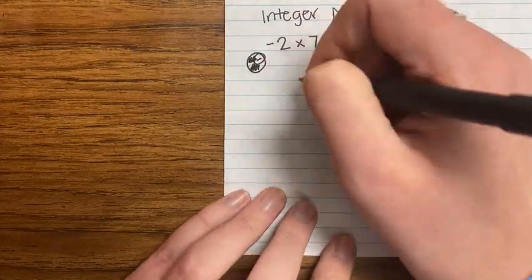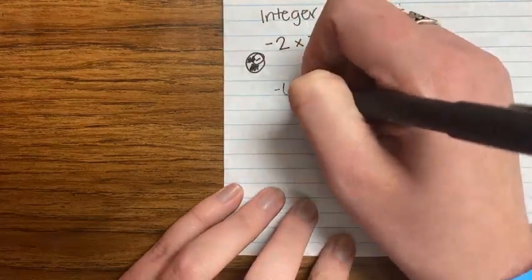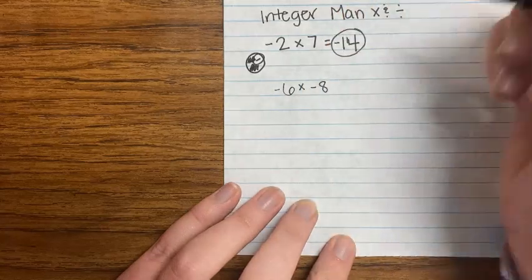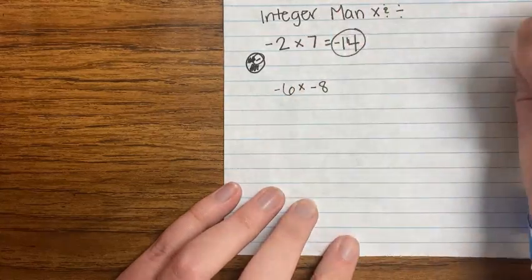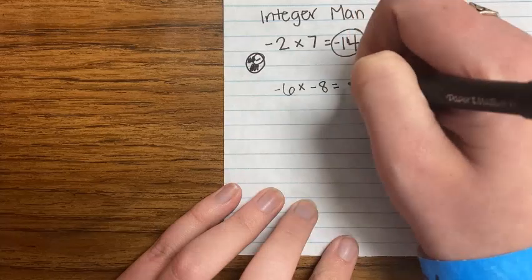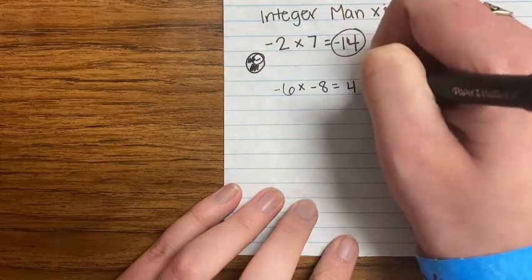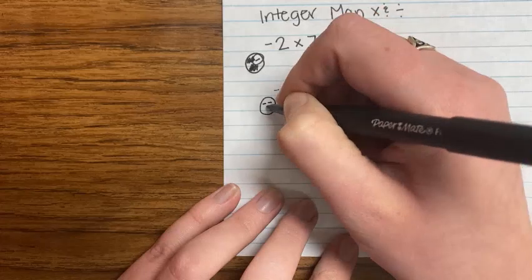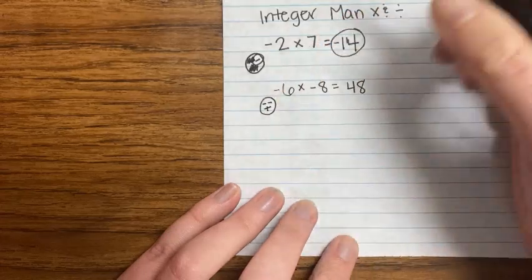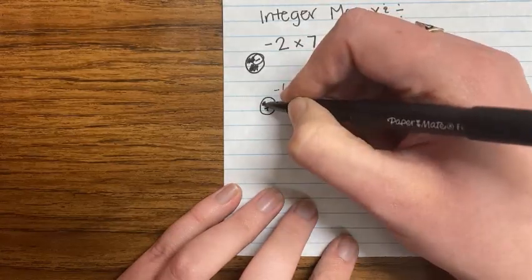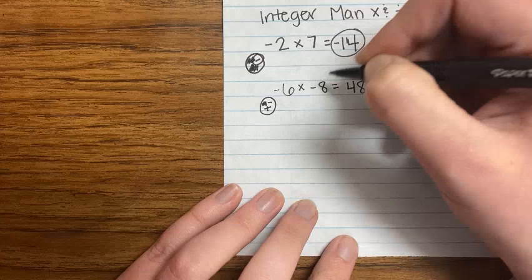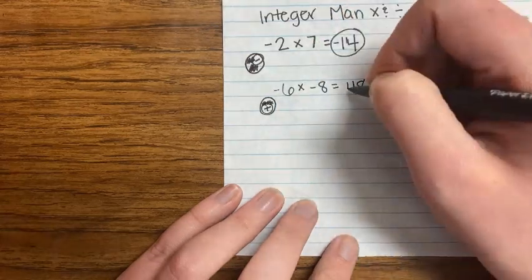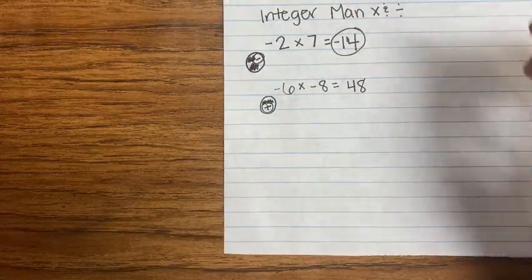If we have something like negative 6 times negative 8 — those are both negative — do regular multiplication: 6 times 8 is 48. But I need my integer man, so go ahead and draw him. I have a negative 6, so I mark out a negative. And a negative 8, so I mark out a negative. A positive is left, so it's just positive 48.